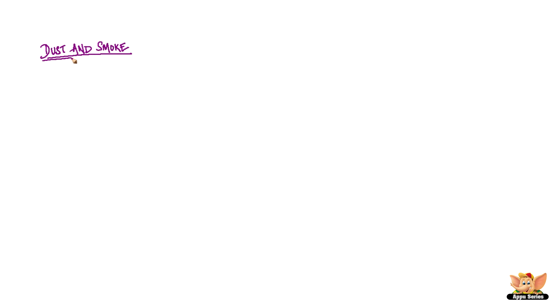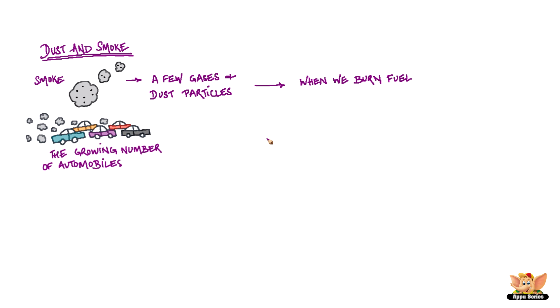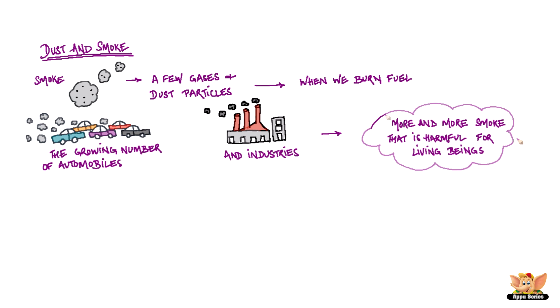Dust and smoke. Smoke contains a few gases and fine dust particles. It is produced when we burn fuel. The growing number of automobiles and industries in the world is producing more and more smoke that is harmful for living beings.